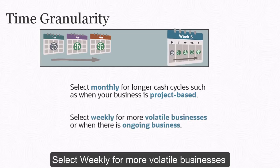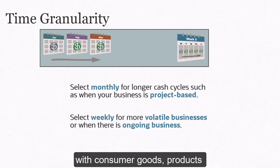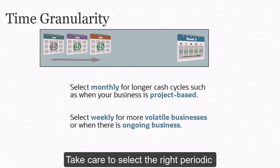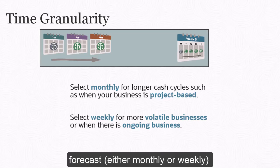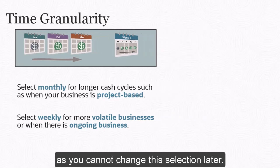Select weekly for more volatile businesses or when there is ongoing business such as with consumer goods, products, or services businesses. Take care to select the right periodic forecast — either monthly or weekly — as you cannot change this selection later.